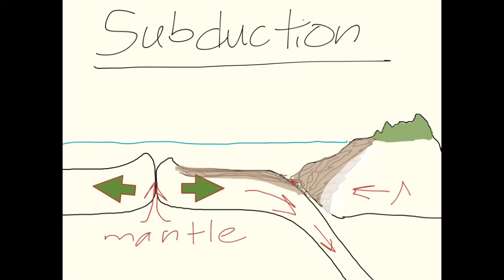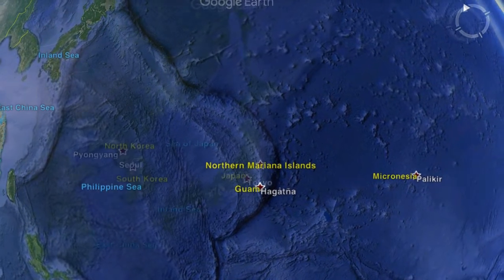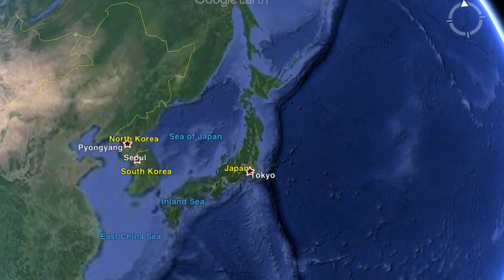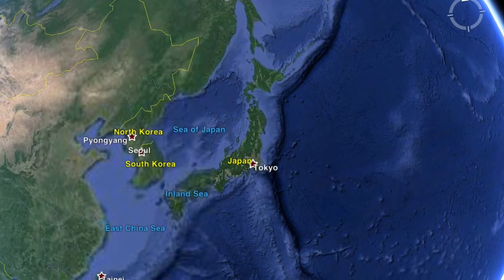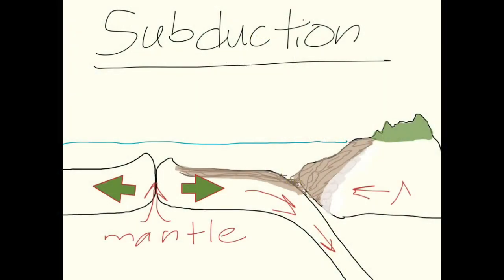Between the continental plate and the oceanic plate is this trench here. And all of the deepest regions on the Earth's oceans are in these oceanic trenches, such as the Marianas Trench or a series of trenches off the coast of Japan or South America, where other subduction zones are.